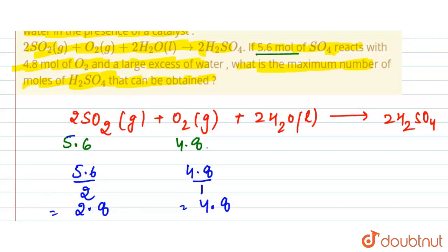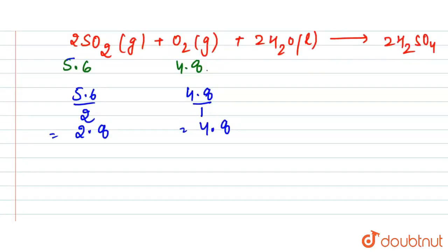So here 2.8 is lower than 4.8, so that's why here our SO2 is the limiting reagent.